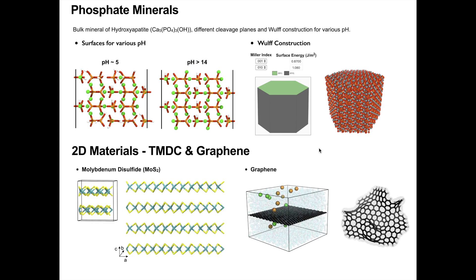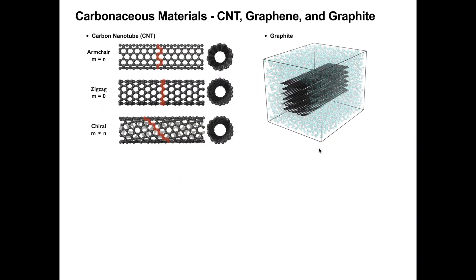Also, Nanomaterial Modeler supports 2D materials including molybdenum disulfide in the transition metal dichalcogenide class and graphene in the carbonaceous materials class. Finally, carbon nanotube in the carbonaceous materials class provides options to control the chirality and size of the nanotube.